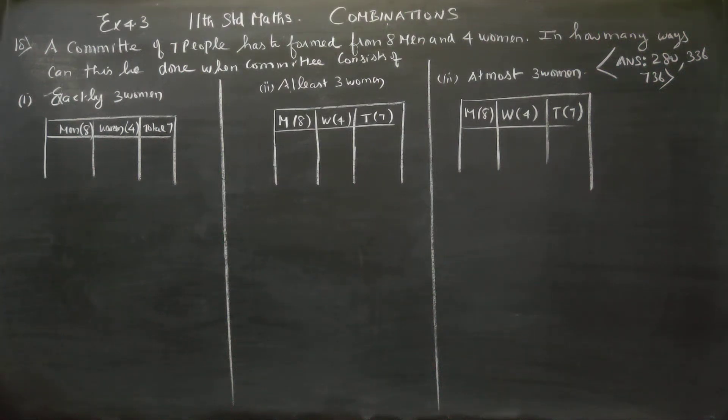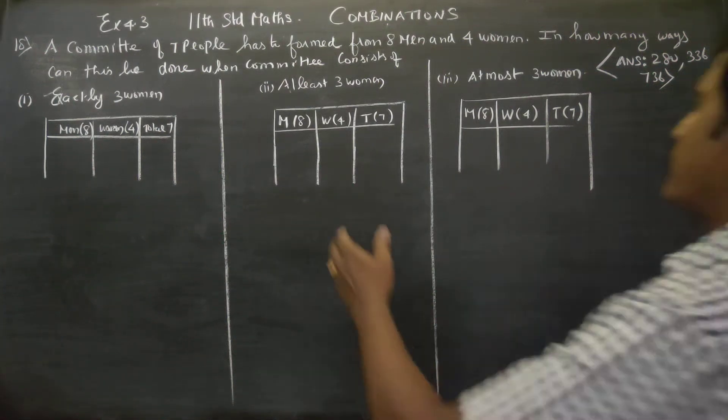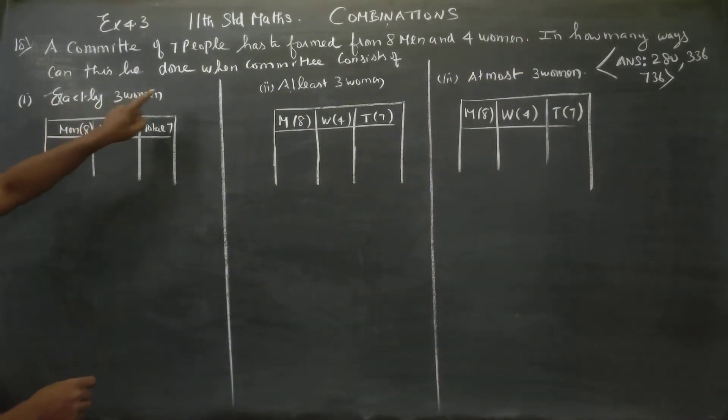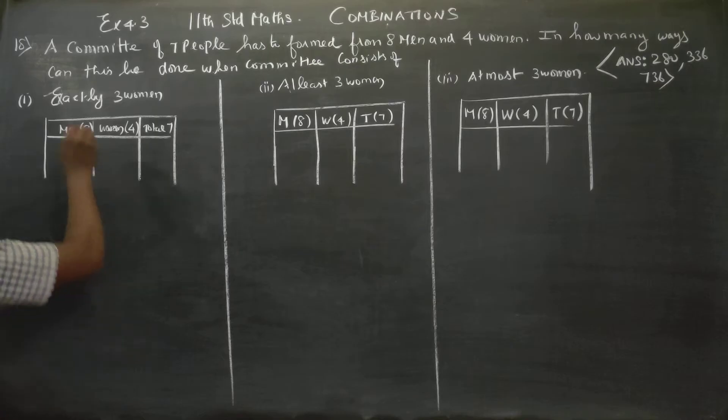Hello, Learnstrand students. A committee of seven people has to be formed from eight men and four women. In how many ways can this be done when the committee consists of exactly three women?